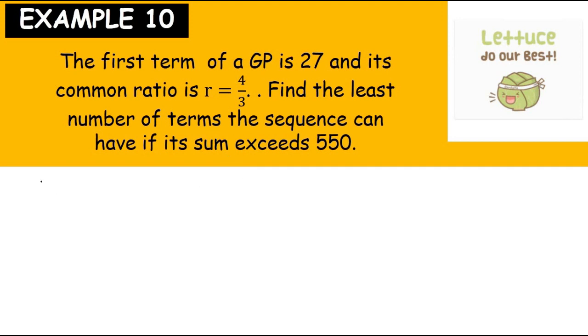Okay, so given to you that A is 27 meanwhile R is 4 over 3. So the least number of terms in the sequence if the sum of N that you don't know exceeds 550. So apply the formula for your summation here.